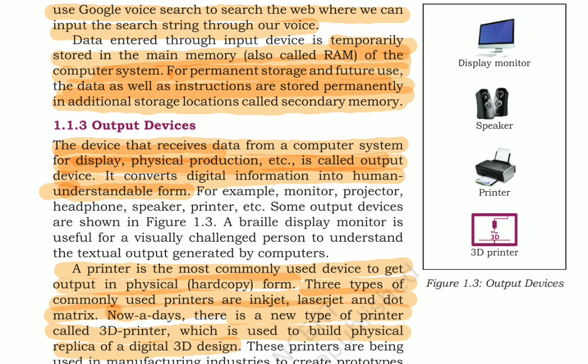Output devices produce results with the help of devices such as printers and monitors. These devices receive all the data or instructions in binary code, that is in the form of zeros and ones. The output devices convert binary codes into human-readable or intelligible form of language for better understanding and functionality. They produce the converted result to the user in a form that is comprehensible by humans. Printers, monitors, and projectors are the prime examples of output devices.